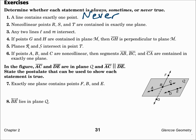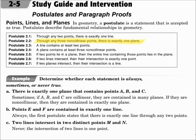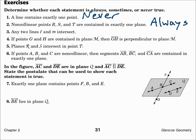Number two: non-collinear points R, S, and T are contained in exactly one plane. Since through any three non-collinear points there is exactly one plane, this statement is always true.